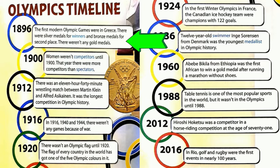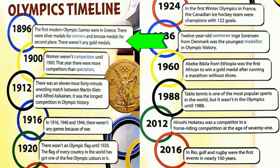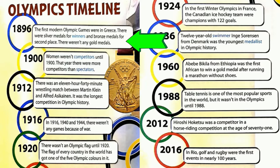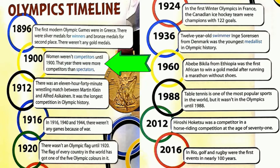1896. The first modern Olympic Games were in Greece. There were silver medals for winners and bronze medals for second place. There weren't any gold medals.